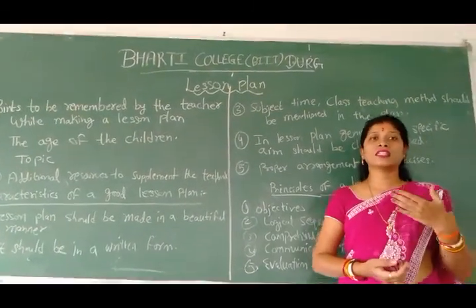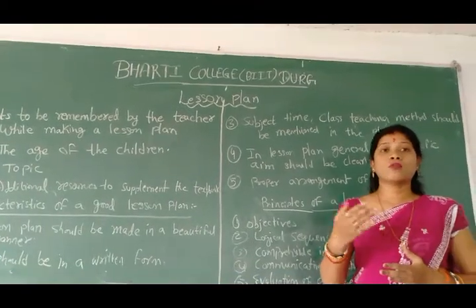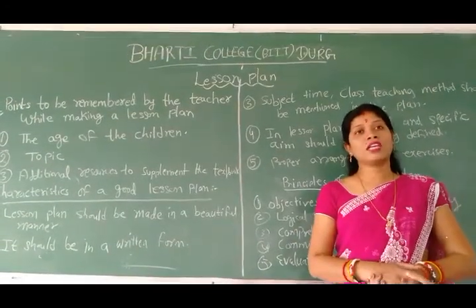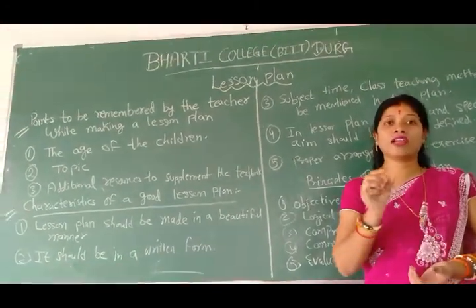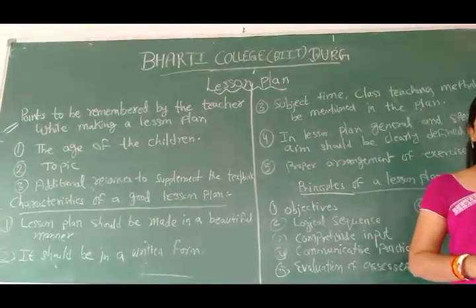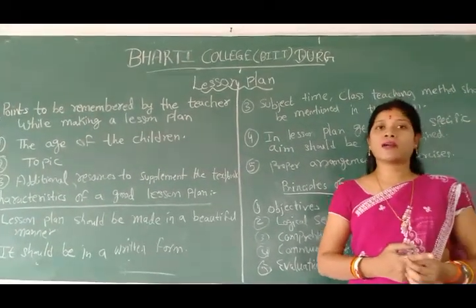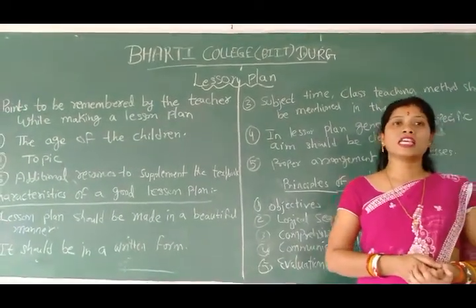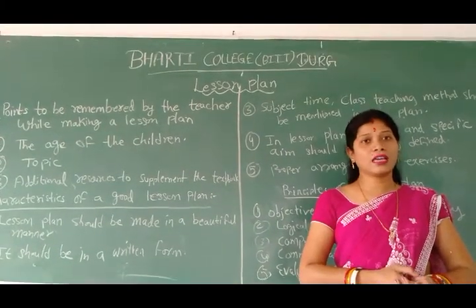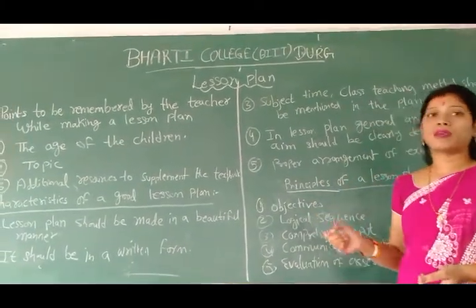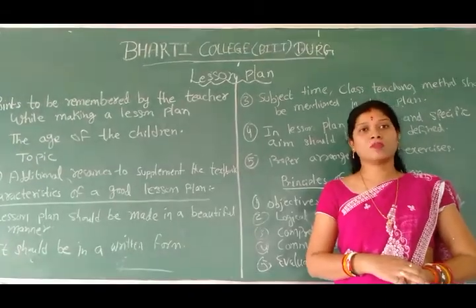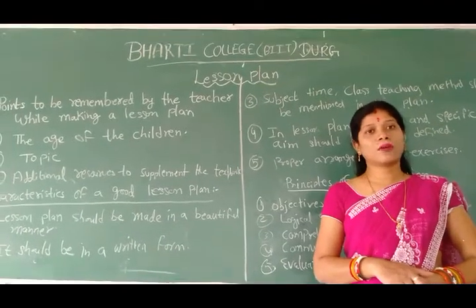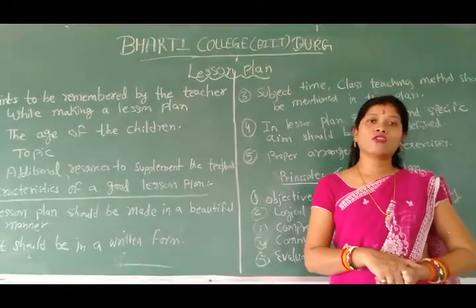When the child understands and speaks properly — when we go to the class, the child should also be able to learn English. Every vocabulary should be clear. If they don't learn English properly, then we don't have general aims. We need to see that the child is speaking properly. This is the objective of general aims and specific aims.